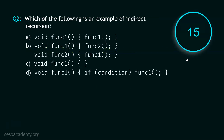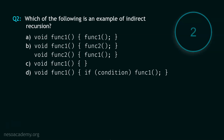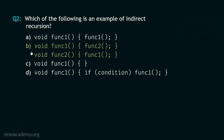And your time starts now. Stop. The correct option is option B. This code snippet is clearly showing indirect recursion. Function 1 is calling function 2, and function 2 is calling function 1. This means this is indirect recursion.